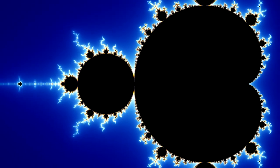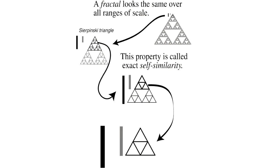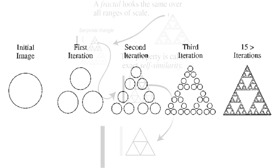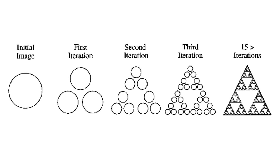Today I want to talk about these fascinating and beautiful things called fractals. Fractals essentially are patterns that have the property of self-similarity. So no matter what scale you look at fractals on, every smaller piece contains the whole, and the whole contains the whole.